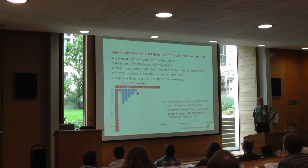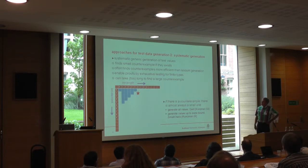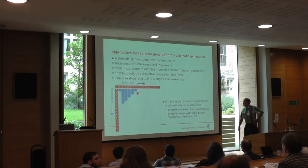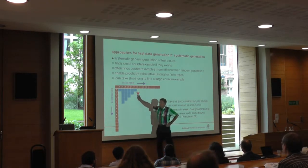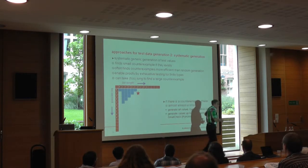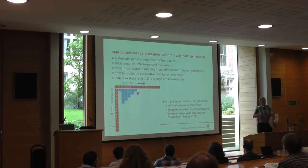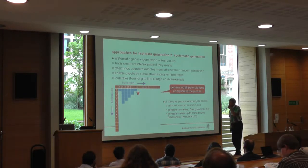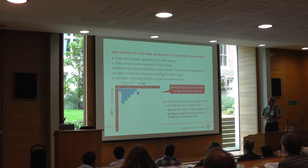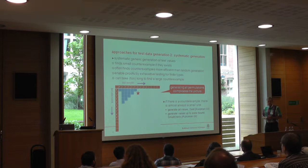The drawback is that it can take too long. And you find a large counter-example — you test up to that large counter-example, and at this point you stop, so it escapes. And of course, this is a simple picture, but in reality things are more complicated because you generate all kinds of permutations.